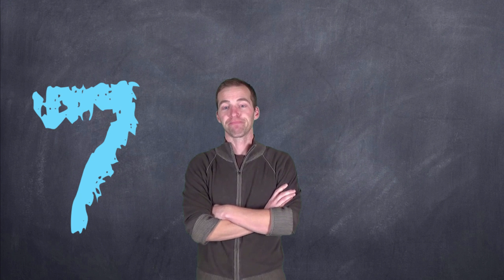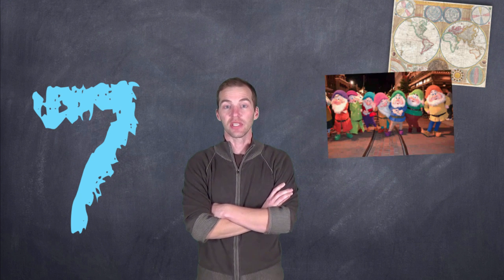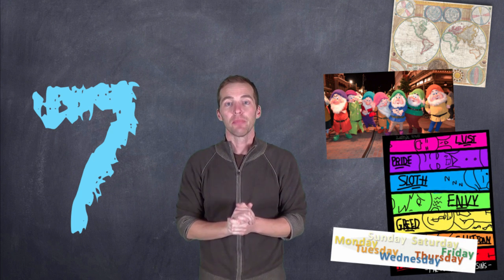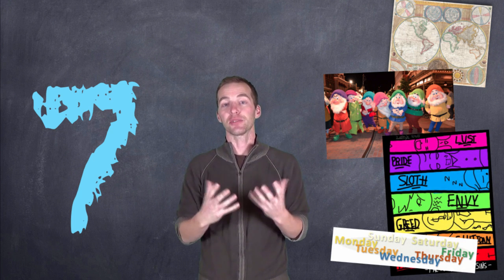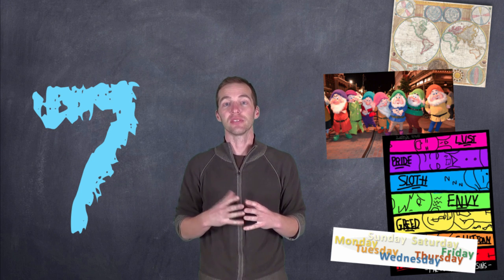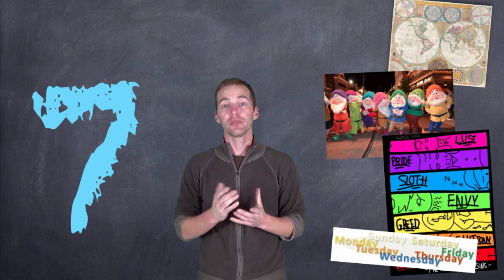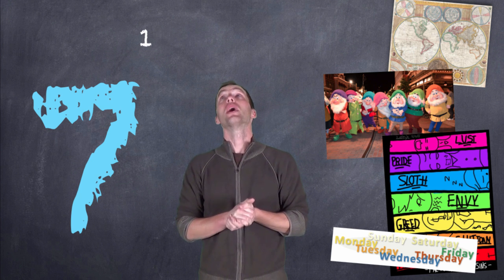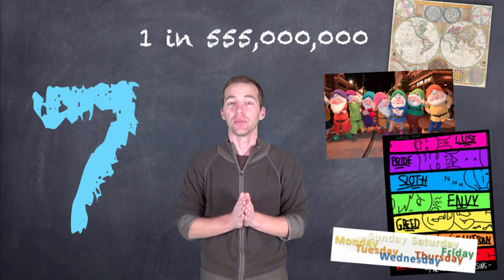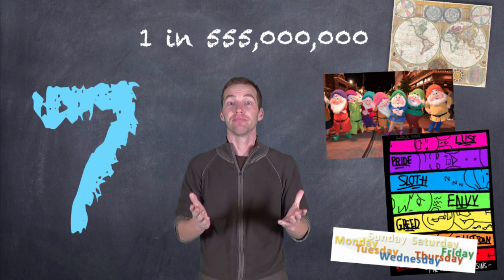That's the number seven — as in the seven seas, the seven dwarfs, the seven deadly sins, or the seven days of the week. But in chemistry, seven means something that's a neutral substance, neither acidic nor basic. How do we figure that out? Well, we use this relationship: one in 555 million. So how does that equate to the number seven? Let's figure it out.